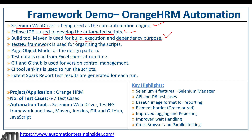For the testing framework we are going to use TestNG to organize the scripts. Page Object Model is used as the design pattern — to have page classes and test classes. For test data we are going to use Excel sheets from where we can read the data. Git and GitHub are used for version control management, and Jenkins as the CI tool. Extent Spark Report is used for reporting purposes.